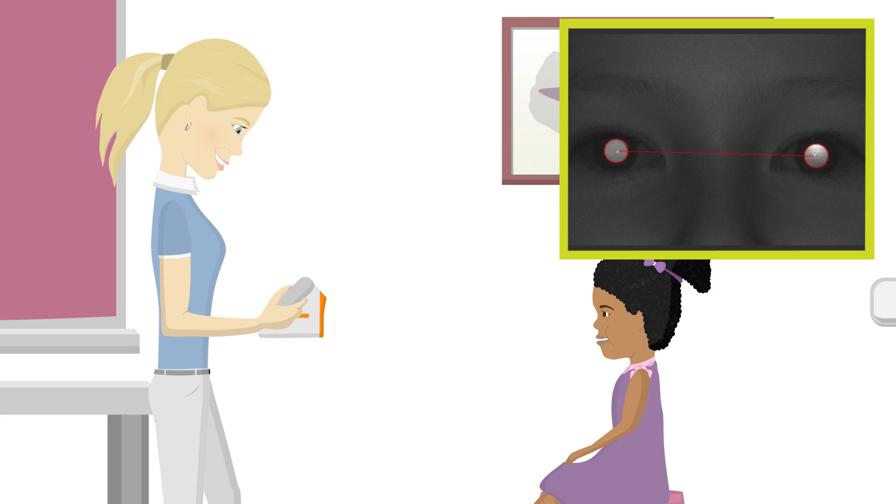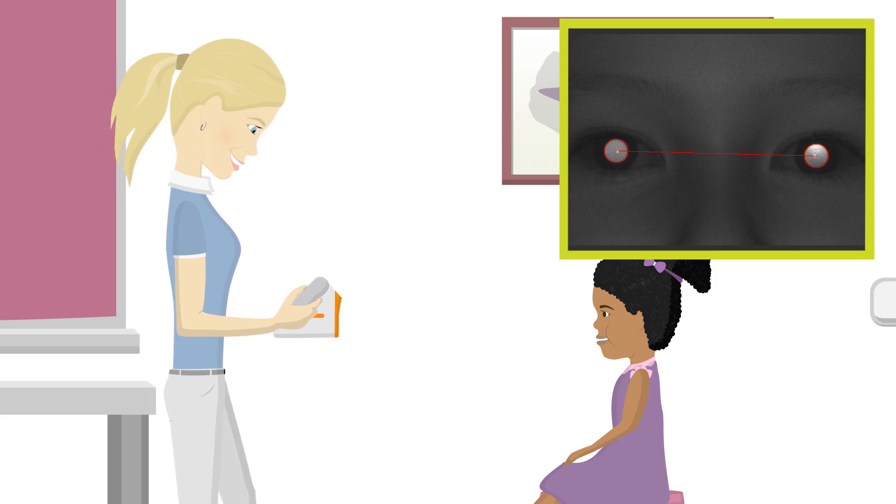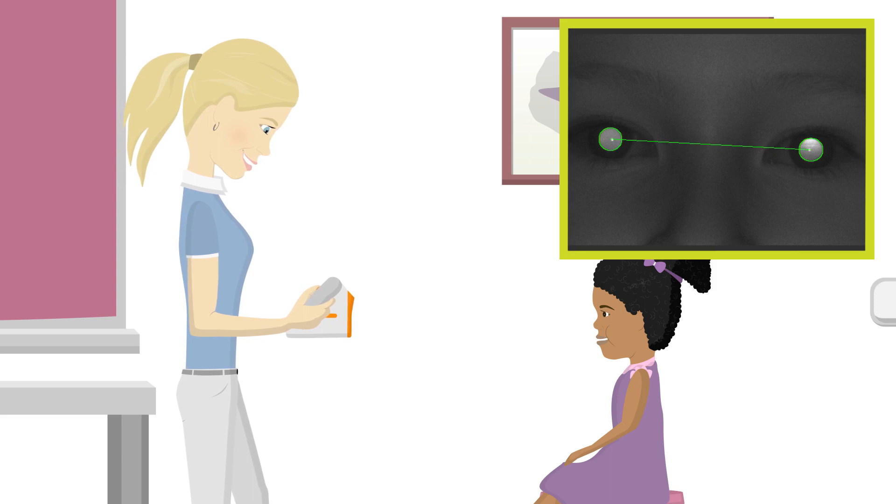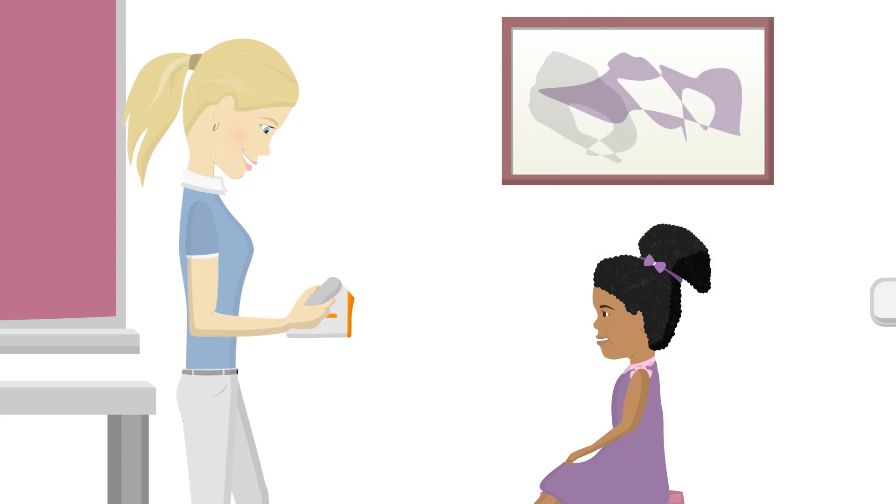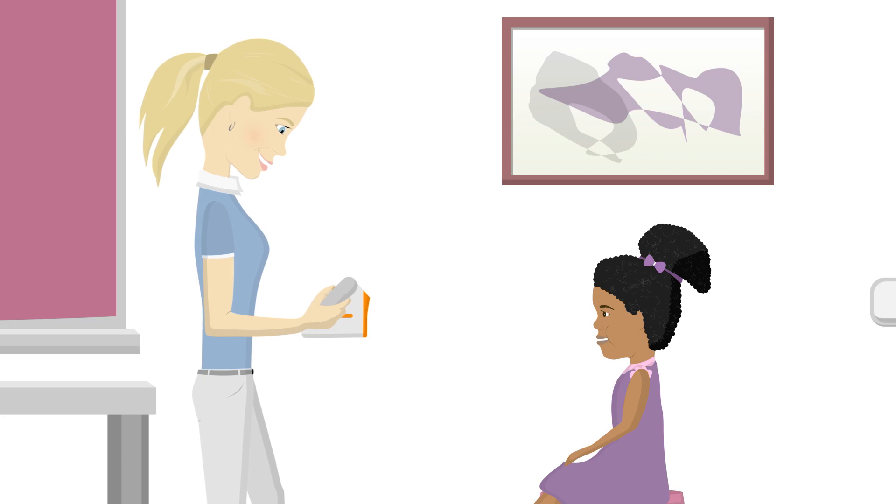Anna needs to continue in that direction until the red circles begin to turn green. Standing with one leg slightly in front of the other, as if riding a surfboard, allows Anna to easily rock forward or backward as necessary to obtain green circles around each pupil she sees on the screen.